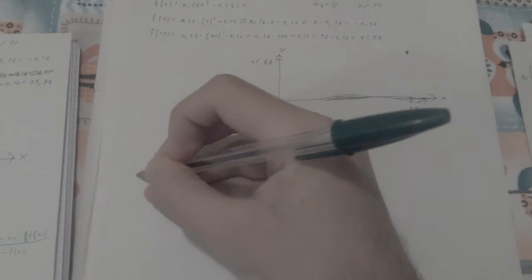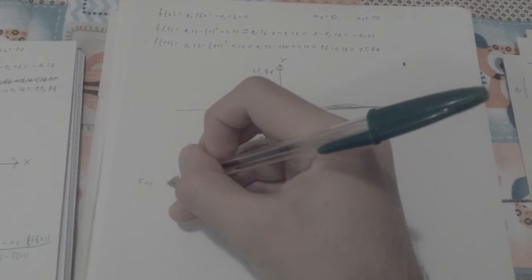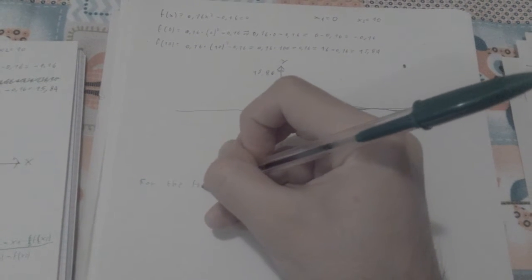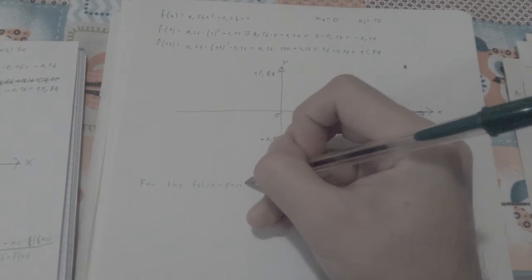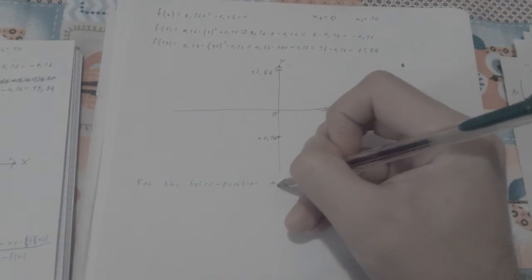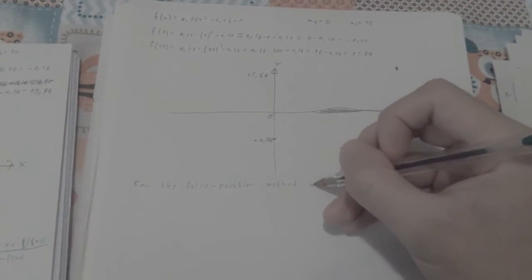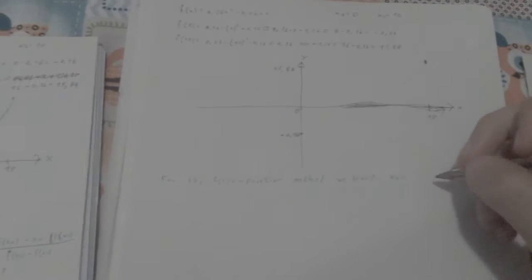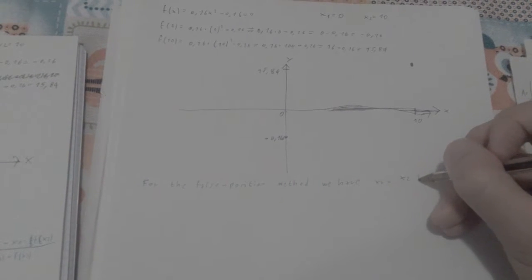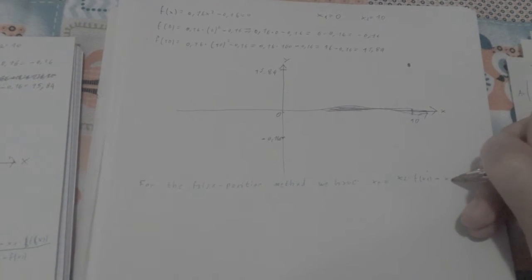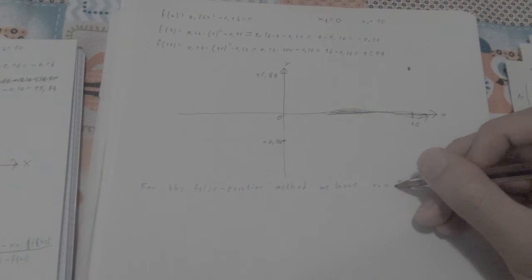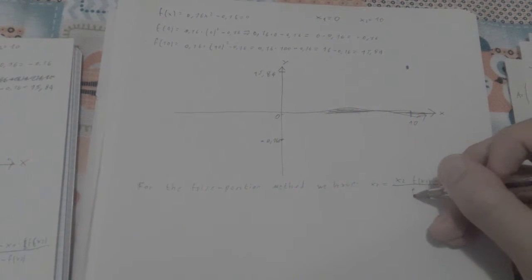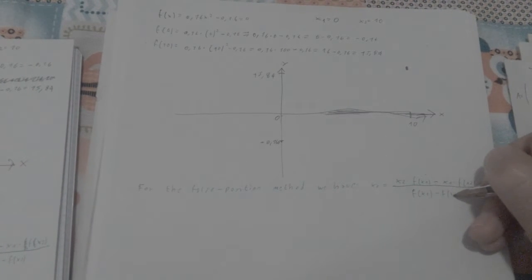So as I always do, I'm going to write the formula. So for the false position method, we have xr equal to x2 times f(x1) minus x1 times f(x2), everything over f(x1) minus f(x2). There we go.